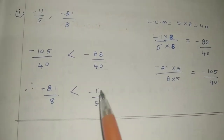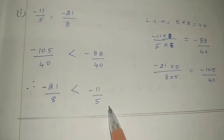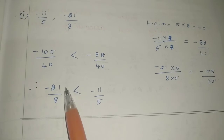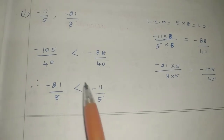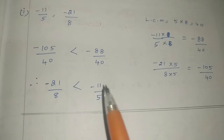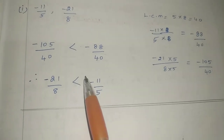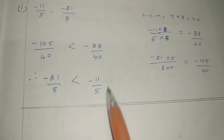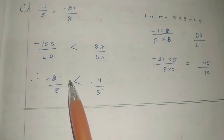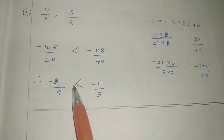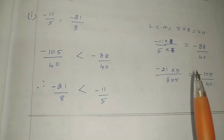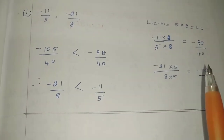Therefore, minus 11 by 5 is greater than minus 21 by 8. We use the greater-than symbol. Where the mouth of the symbol is open, that is greater; where the mouth is closed, that is lesser.